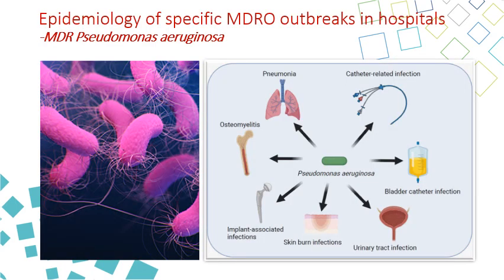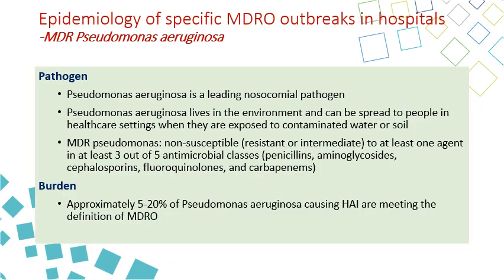The next MDRO is MDR Pseudomonas aeruginosa. Pseudomonas aeruginosa is a leading cause for nosocomial infections, and probably it is the most common infection encountered as HAI. Pseudomonas aeruginosa lives in the environment, so it can be seen on water or soil, on surfaces, and on objects.